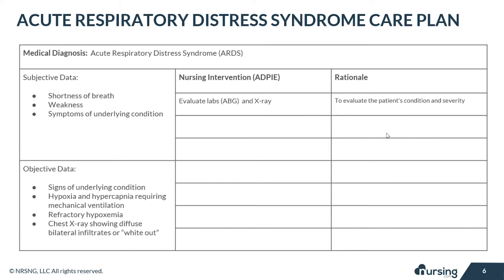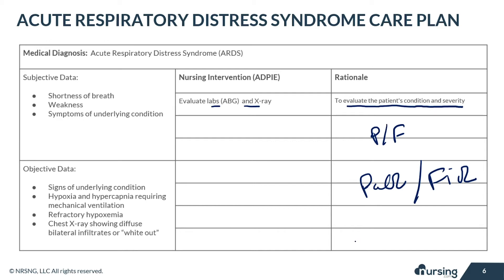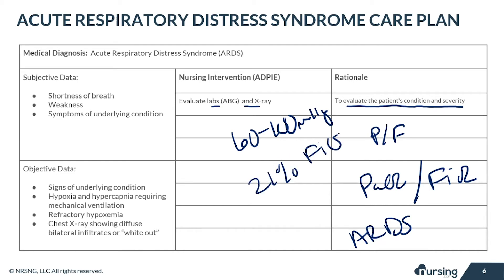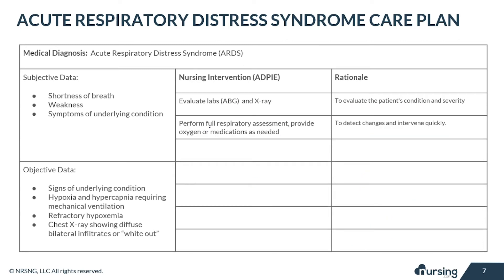For nursing interventions, ensure that labs and the chest X-ray are completed so that you and the doctor can evaluate the patient's condition and severity. If the PF ratio isn't already in your lab work, you may determine it by dividing PaO2 by FiO2. This allows you to determine if the hypoxemia is unresponsive to treatment, indicating ARDS. The normal PaO2 is 60 to 100 mmHg on room air, or 21% FiO2.